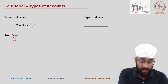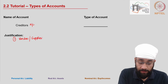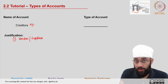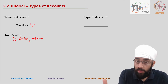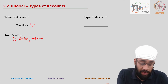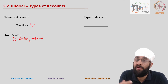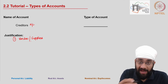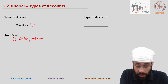Creditors are the vendors or suppliers of the business. Based upon the going concern principle, you expect the business to continue for a long period of time, and therefore your vendors and suppliers supply goods to you and you can pay them after a lag — after a certain period of time. When that happens, a new account is created called the creditors account.